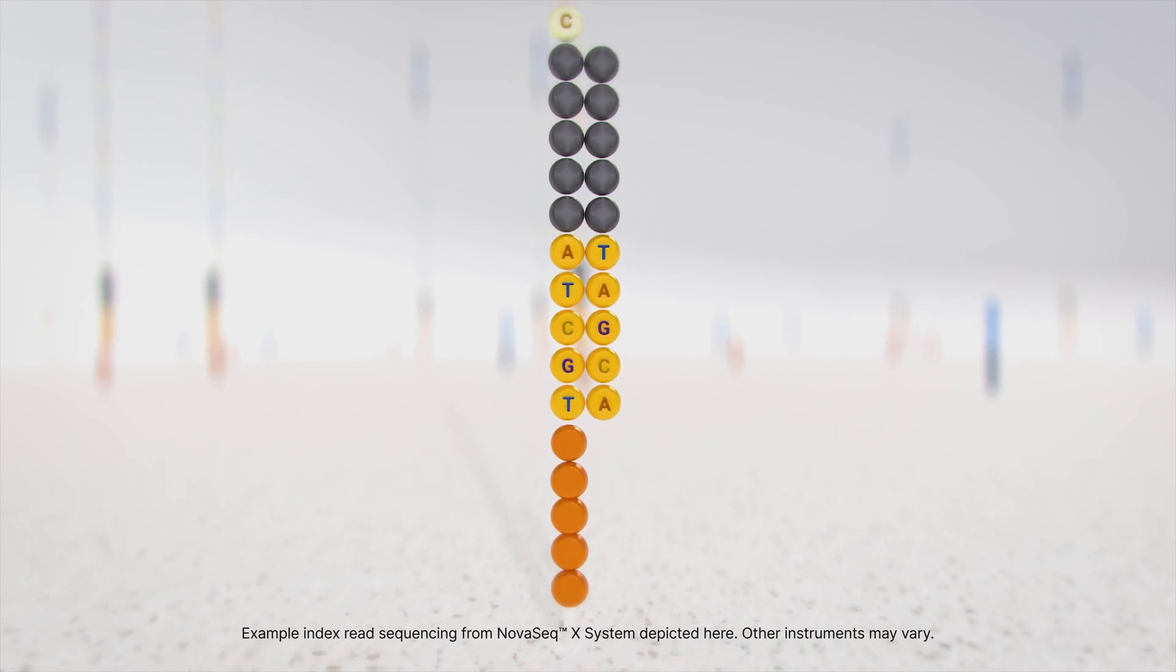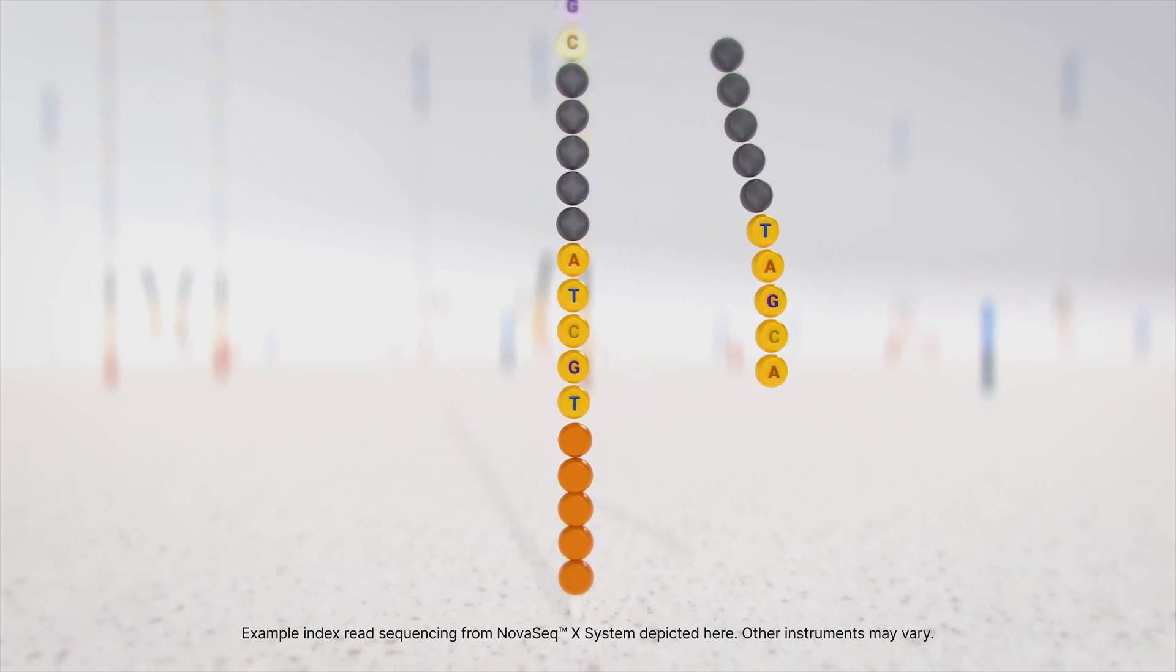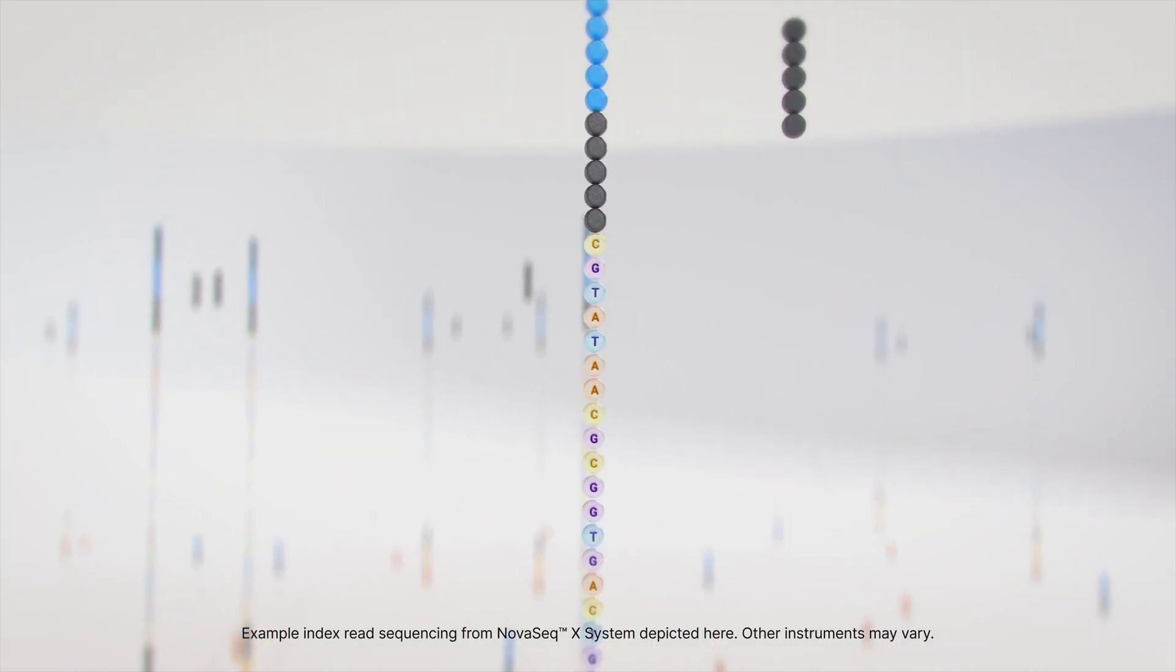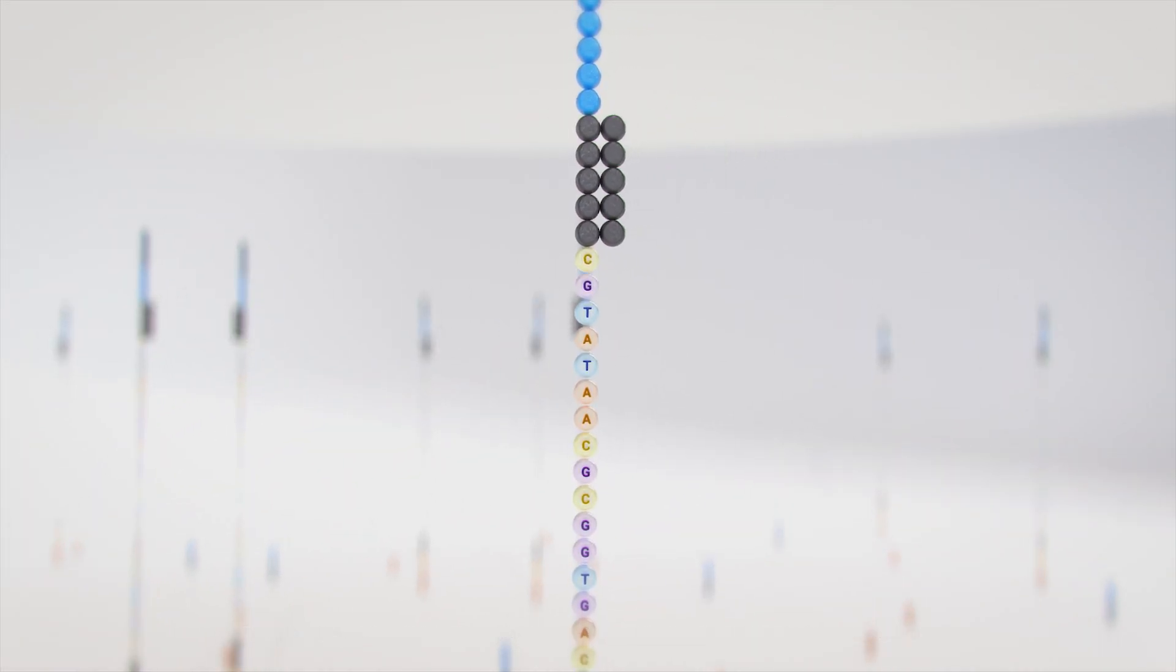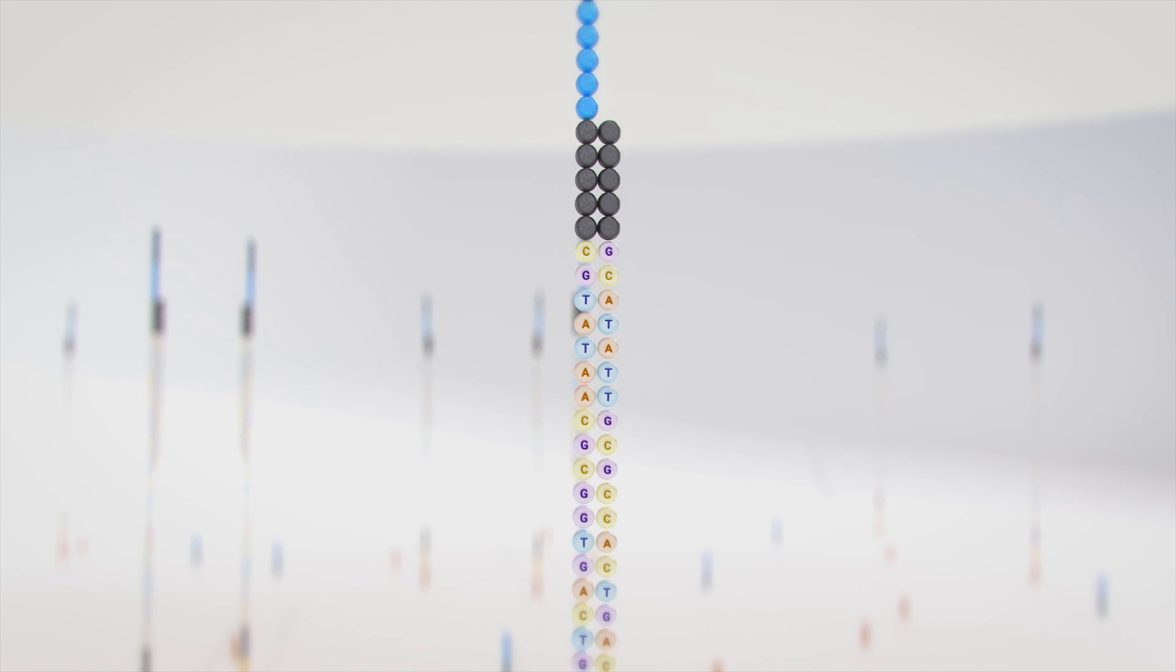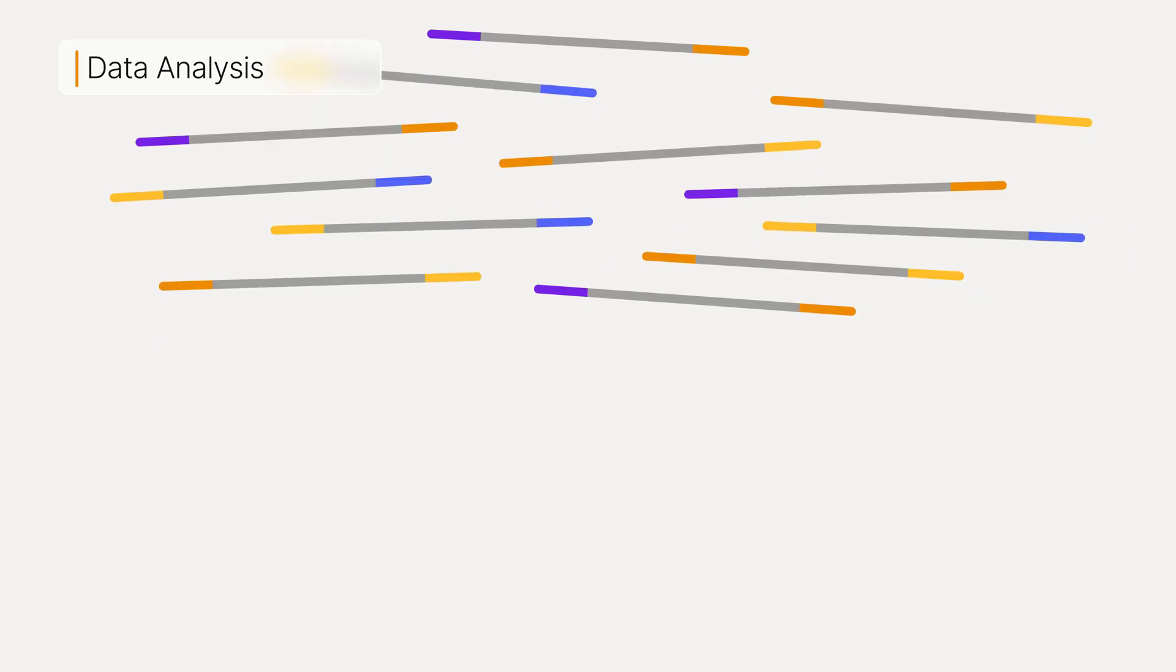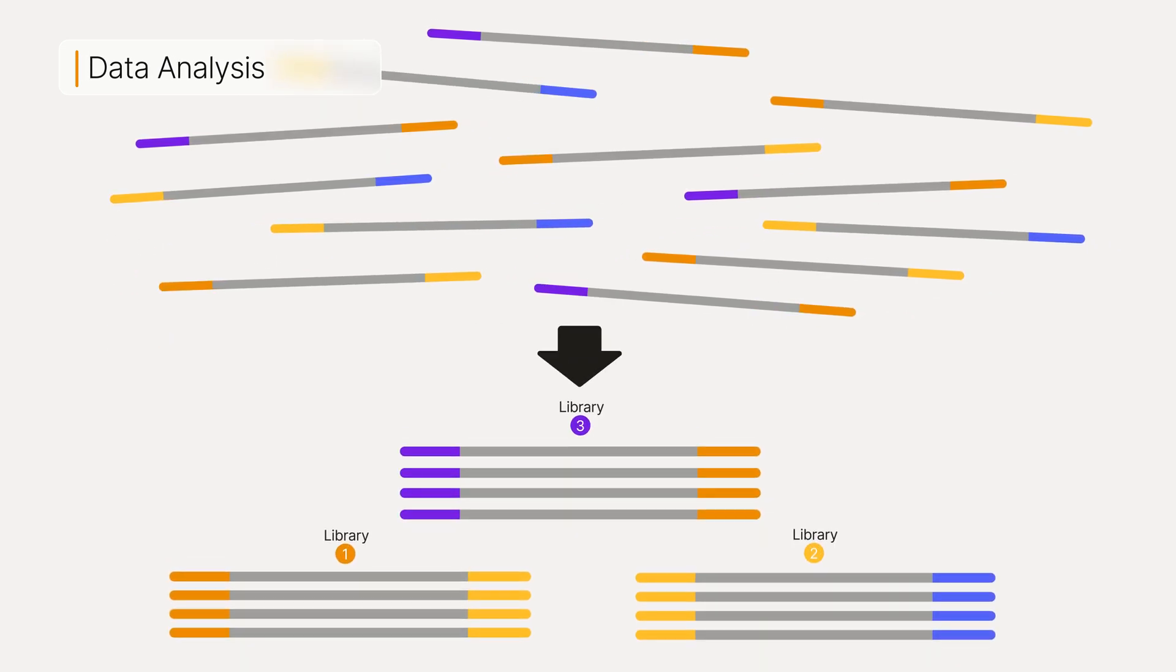The index 2 product is then washed away. Read 2 begins with the introduction of the read 2 sequencing primer. As with read 1, the sequencing steps are repeated until the desired read length is achieved. This entire process generates billions of reads representing all of the fragments. Sequences from pooled libraries are separated based on the unique indexes introduced during the library preparation.